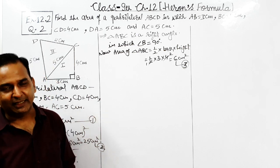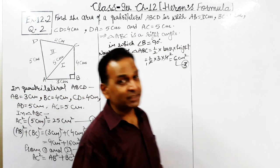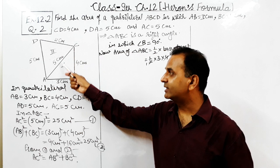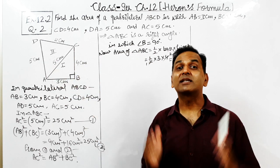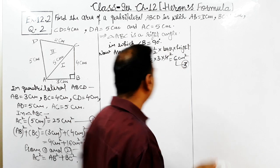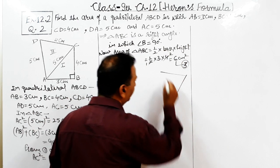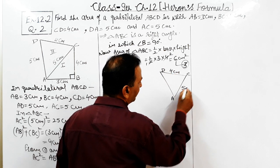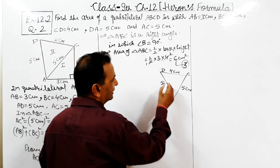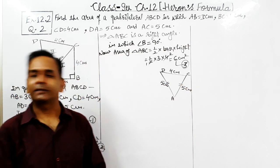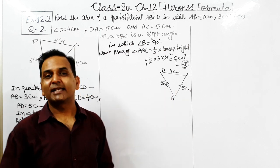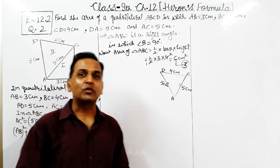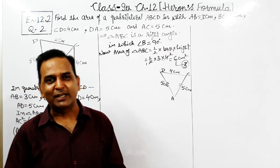Now come to the second triangle ACD. Its dimensions are 4 cm, 5 cm, and 5 cm. Since its two sides are equal, it means it is an isosceles triangle. So there is no need to use Heron's formula. We can find out its area by using the specific formula for the area of an isosceles triangle.